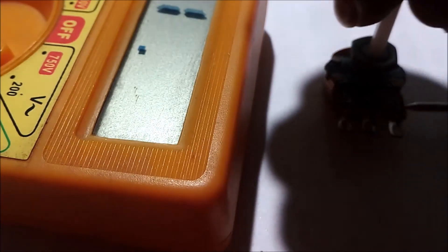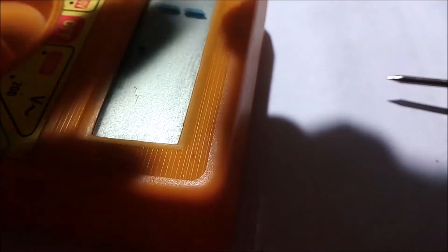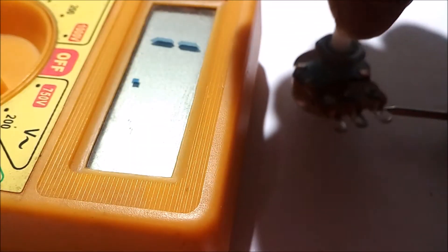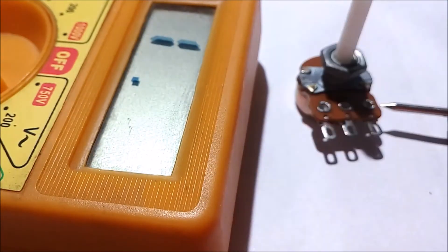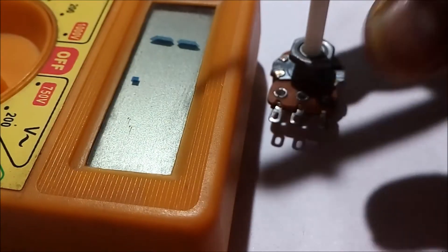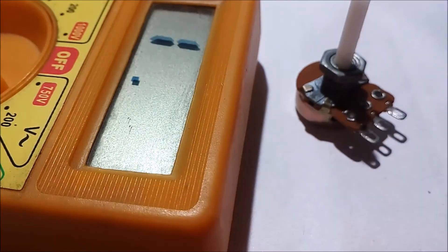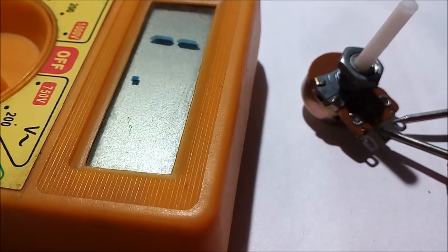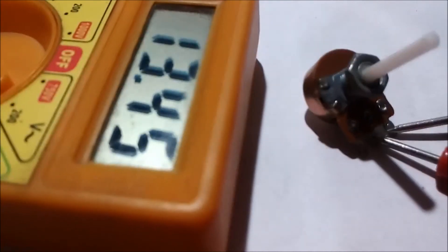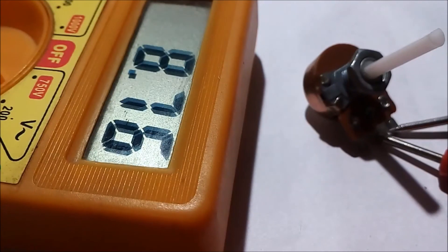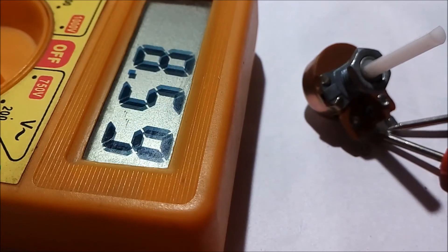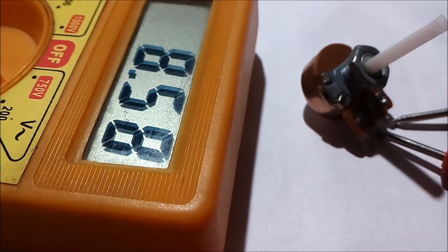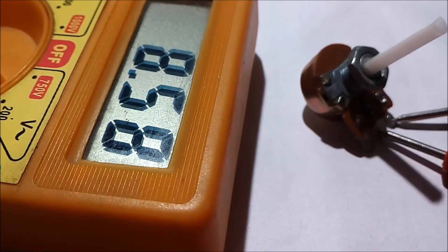Now I am going to move the probe of the resistor and then again measure the value of resistance in the same way as I had measured. And this is showing that the value of resistance is 8.58 kOhm.